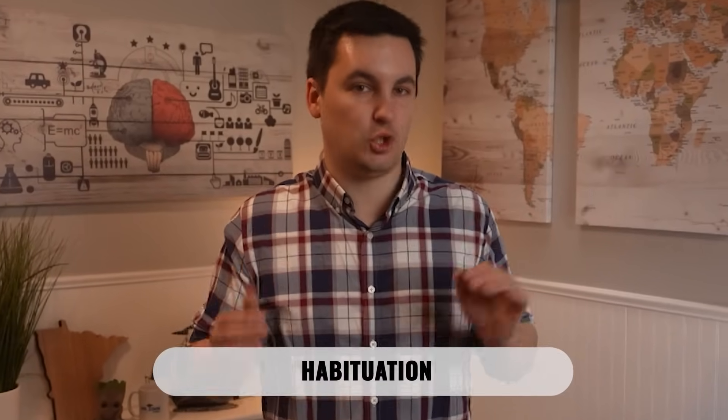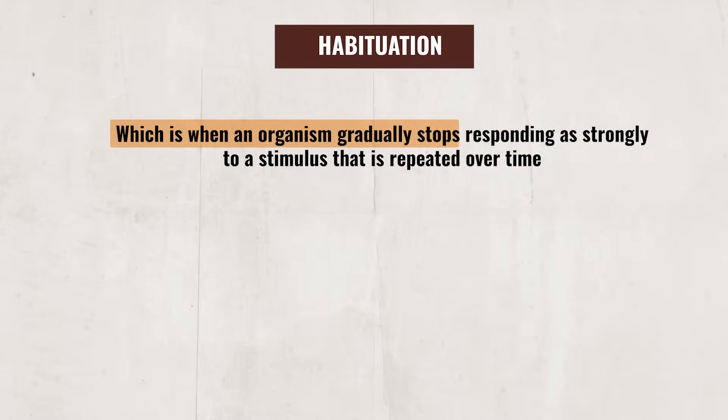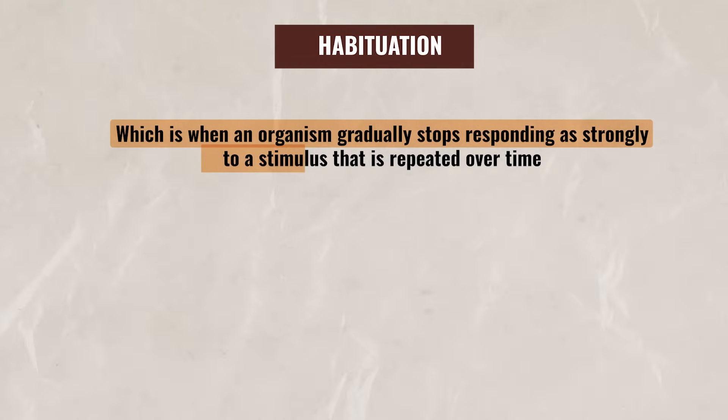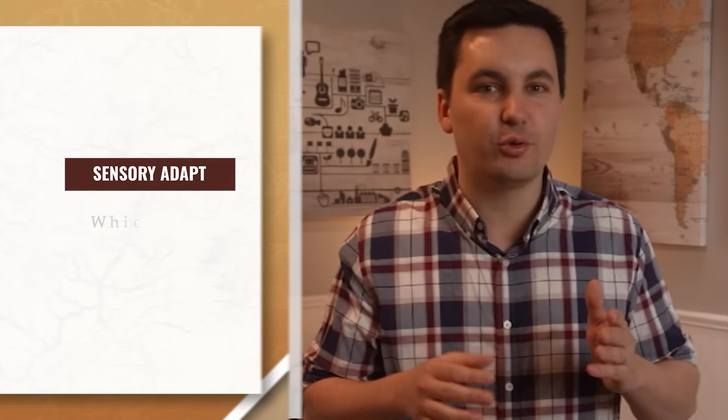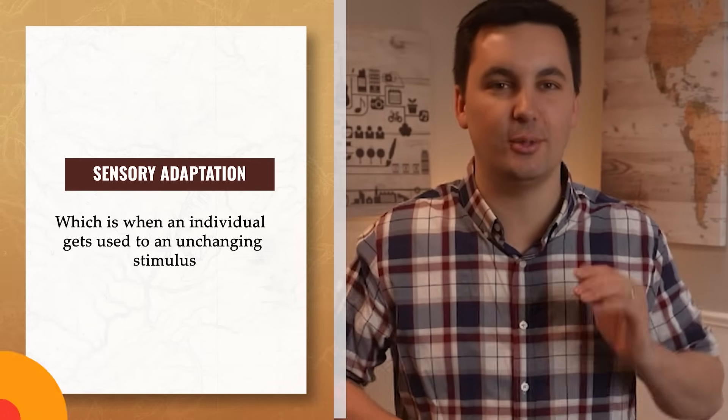We have one last concept left to review and that is habituation, which is when an organism gradually stops responding as strongly to a stimulus that is repeated over time. With habituation, an individual is learning from a repeated stimulus, which then results in a decrease in the individual's responsiveness to the stimulus. Don't get this confused with sensory adaptation, which is when an individual gets used to an unchanging stimulus.